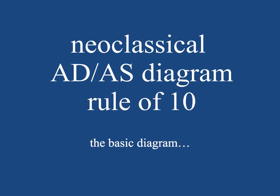Hey everybody, I hope you're doing well today. Let's take a look at how to draw the neoclassical aggregate demand aggregate supply diagram. I'm calling this the Rule of 10, which means there are 10 compulsory components that make up this diagram — which is probably going to be your most useful diagram as you move forward through macroeconomics and into international economics and development economics, the second, third, and fourth components of the IB core syllabus.